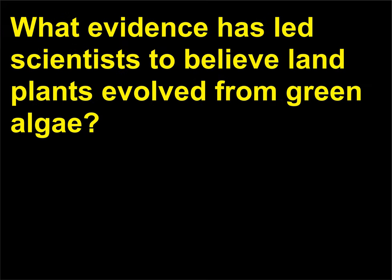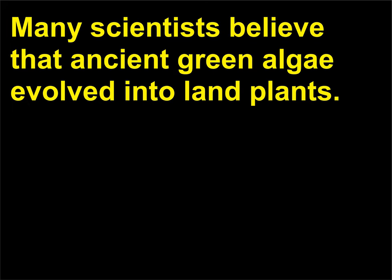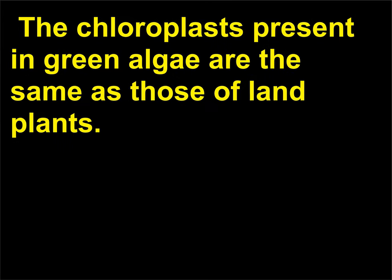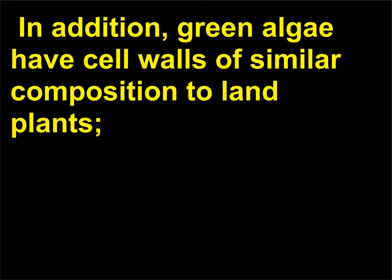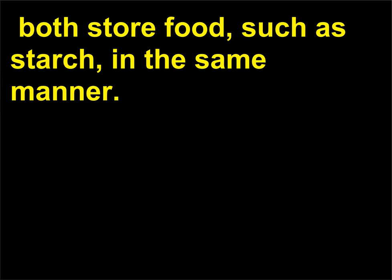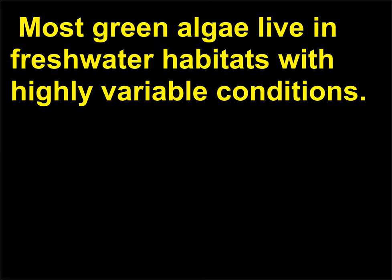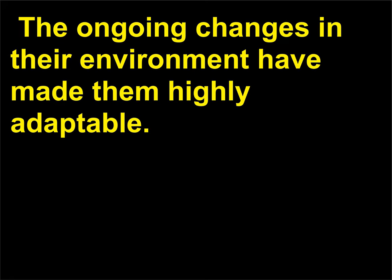What evidence has led scientists to believe land plants evolved from green algae? Many scientists believe that ancient green algae evolved into land plants. The chloroplasts present in green algae are the same as those of land plants. In addition, green algae have cell walls of similar composition to land plants. Both store food, such as starch, in the same manner. Most green algae live in freshwater habitats with highly variable conditions, and the ongoing changes in their environment have made them highly adaptable.